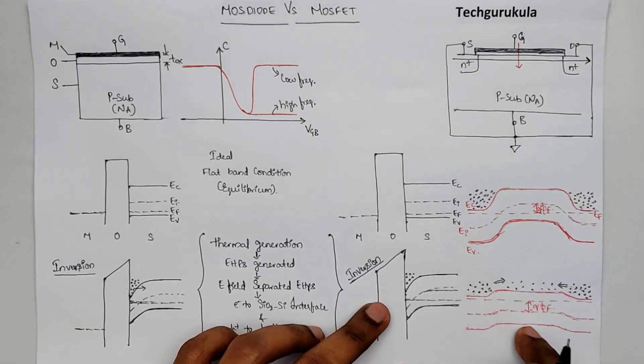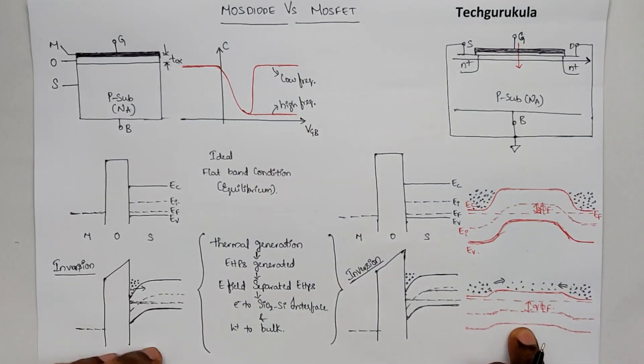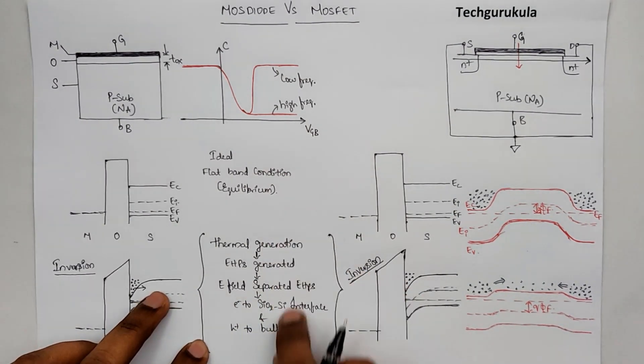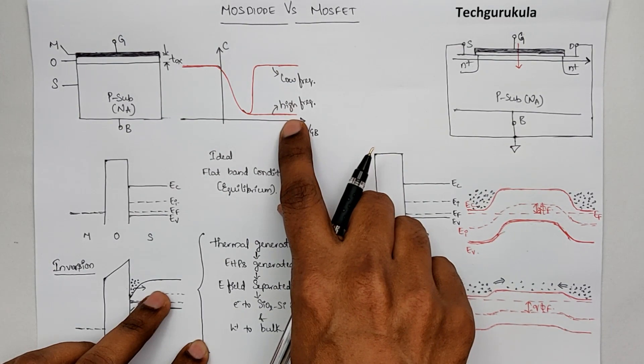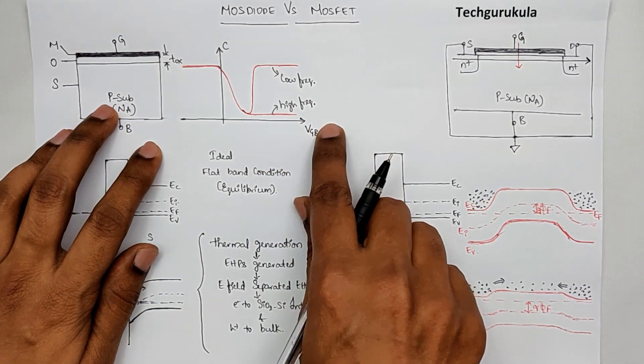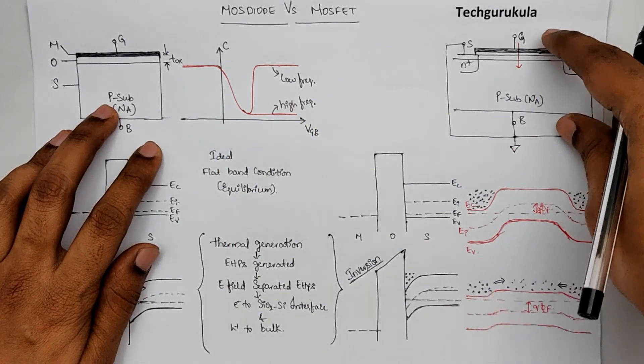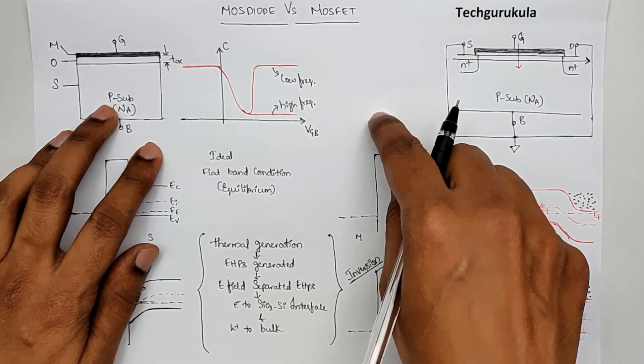In this case, in MOSFET case, we are not depending on this process, which is in fact slow when we apply frequencies. As a result, when we look at this, the CV characteristics for a MOSFET when used like a MOS diode,